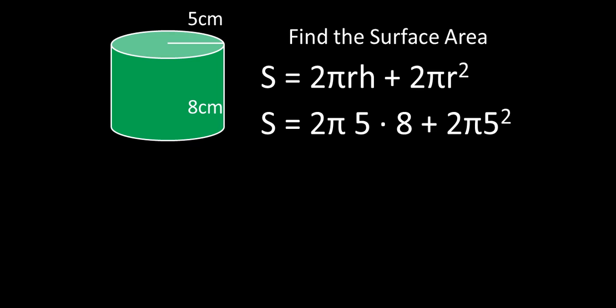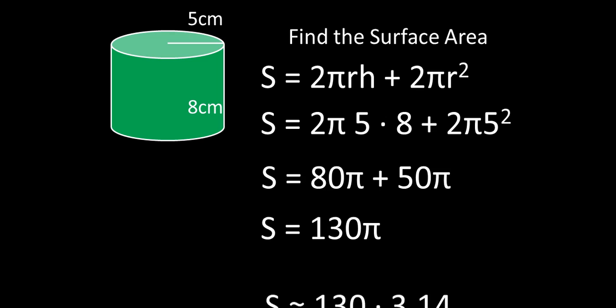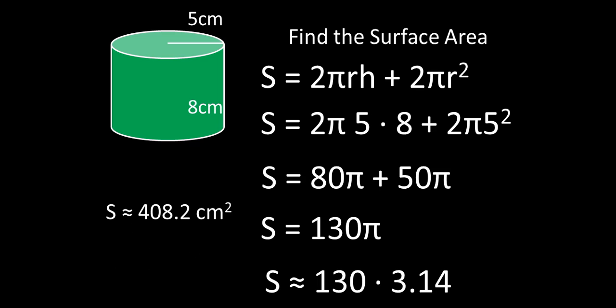Okay, h is height, height of the cylinder is 8. So now we're just going to multiply out. 2 times 5 times 8 is 80, and 2 times 5 squared, 5 squared is 25, 2 times 25 will give us 50π. We add those together and we get 130π or approximately 130 times 3.14. So the surface area is approximately 408.2 square centimeters.